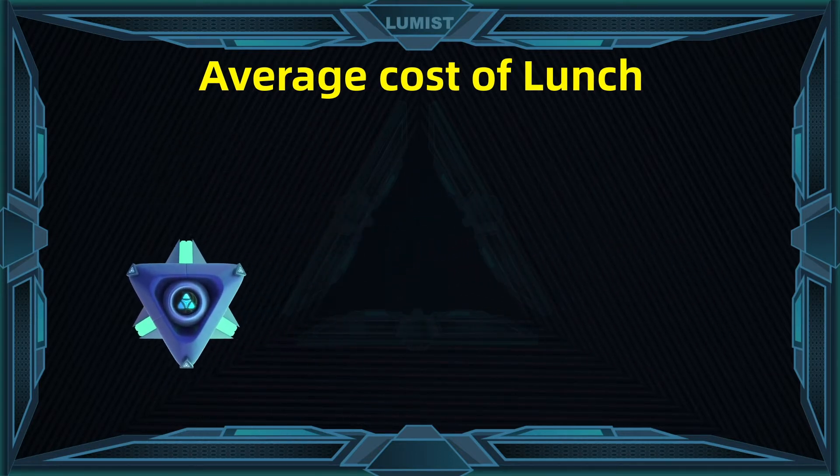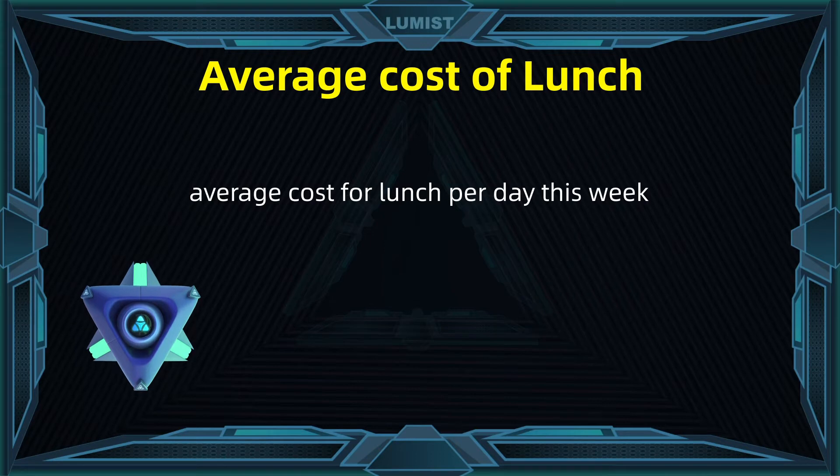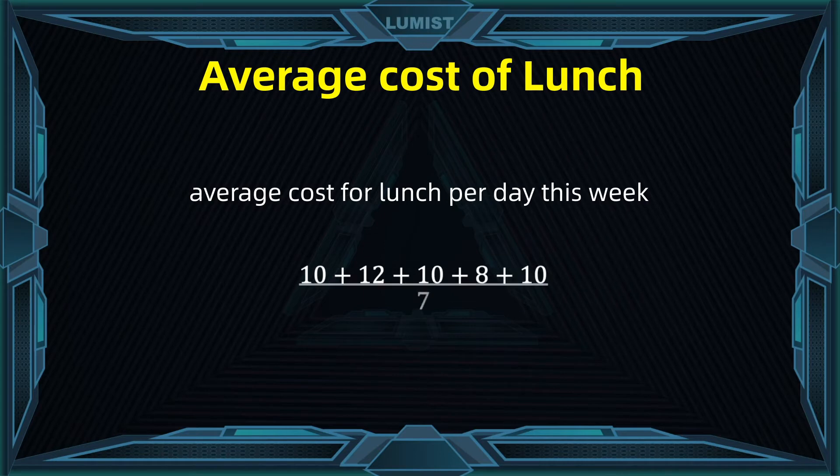The formula is quite simple. You're going to add up every dollar you spend every day and then divide that by the number of days during the week. In this case 7. So 10 plus 12 plus 10 plus 8 plus 10 divided by 7.